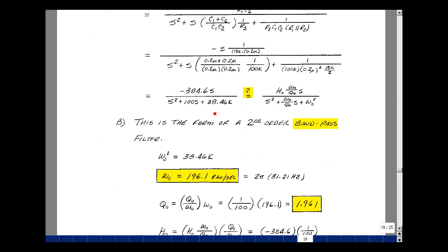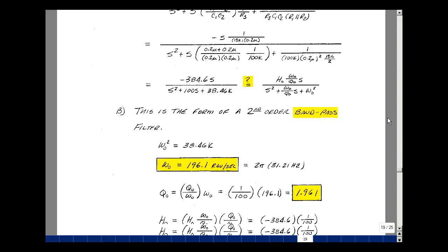This is the term omega naught squared, so I'll take the square root of that and then divide by 2 pi, and you get 31.21 hertz. This term has got Q naught in it, so I'll take the reciprocal of it, so it's 1 over 100, multiply it by omega naught, and I'll get the value then of Q naught, about 2.